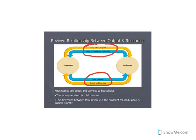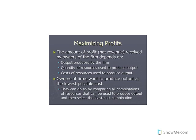Businesses sell their goods and services to households to generate revenue. They use that revenue to pay for their resources, and whatever is left over is profit. Although we learned how a firm maximizes revenue in chapter five, the ultimate goal of the firm is to actually maximize profits — how can they maximize revenue while minimizing costs to have the highest profit margin possible?